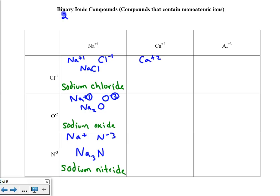Calcium and chloride, crisscrossing. This 2 goes down here, the 1 comes down here. So this is CaCl₂. And the name of this is calcium chloride.